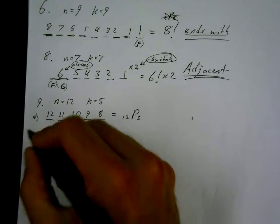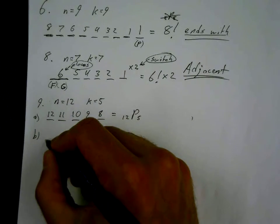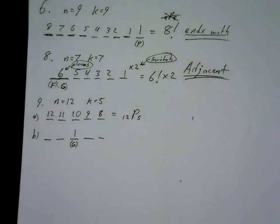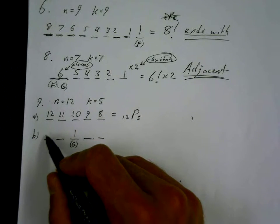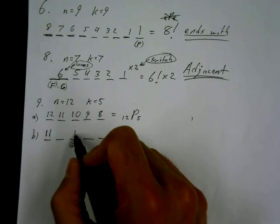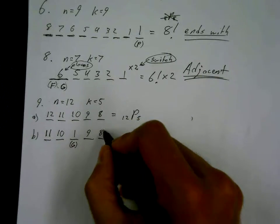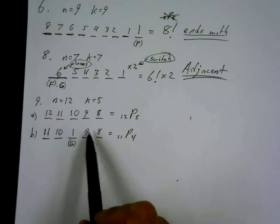Part b: Grandma Ling's picture must be included and hung right in the middle of the group of five. Restriction first — Grandma must go in the middle spot, and there is one painting of Grandma, so that's a 1. Then go back to the beginning: Grandma was taken from the bag, leaving 11. So we get 11, 10, 9, 8 for the remaining four seats. This equals 11P4. The one doesn't matter — multiplying by one changes nothing.